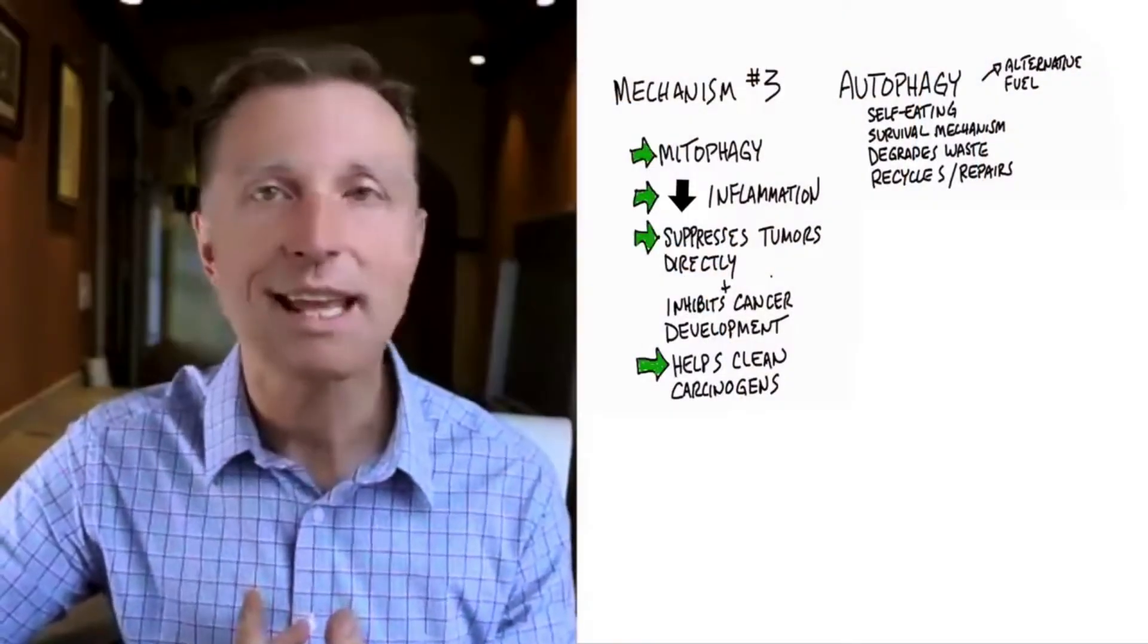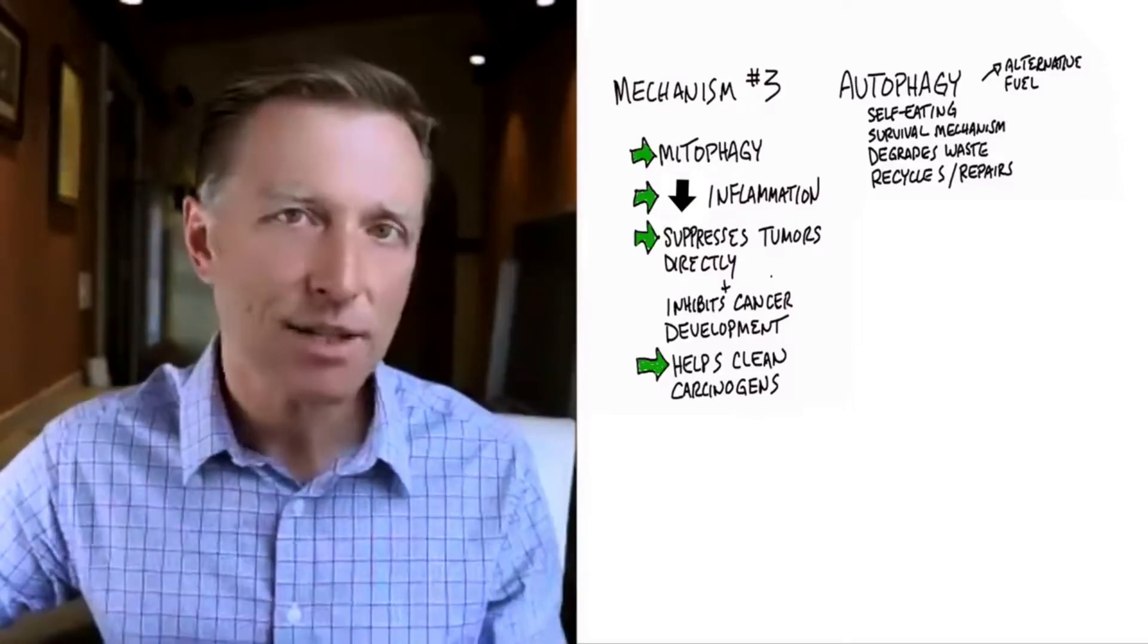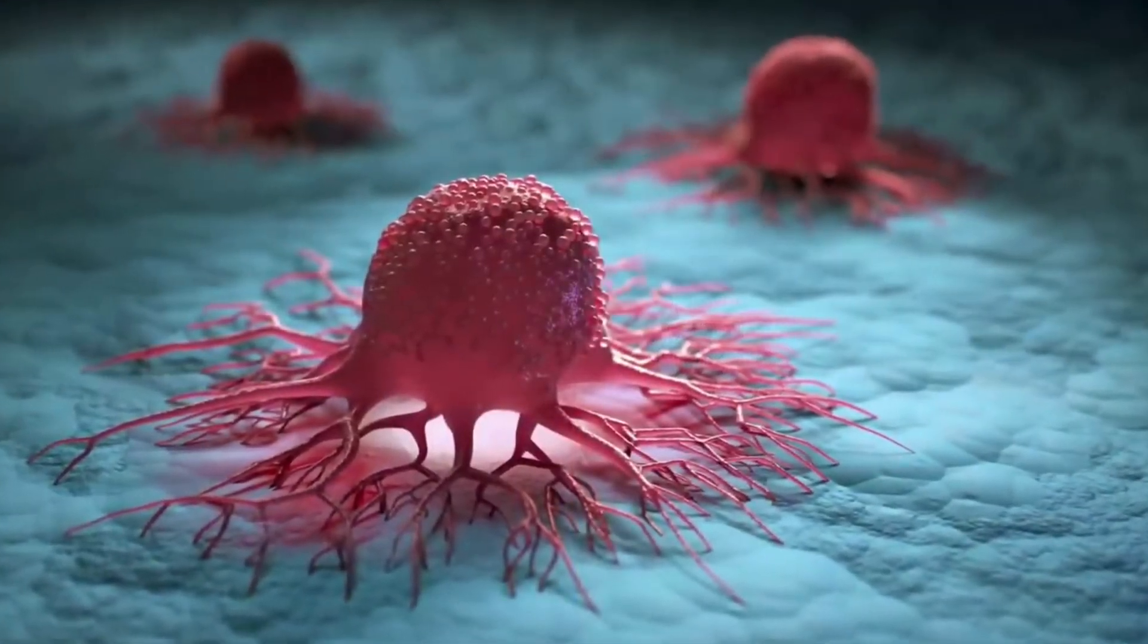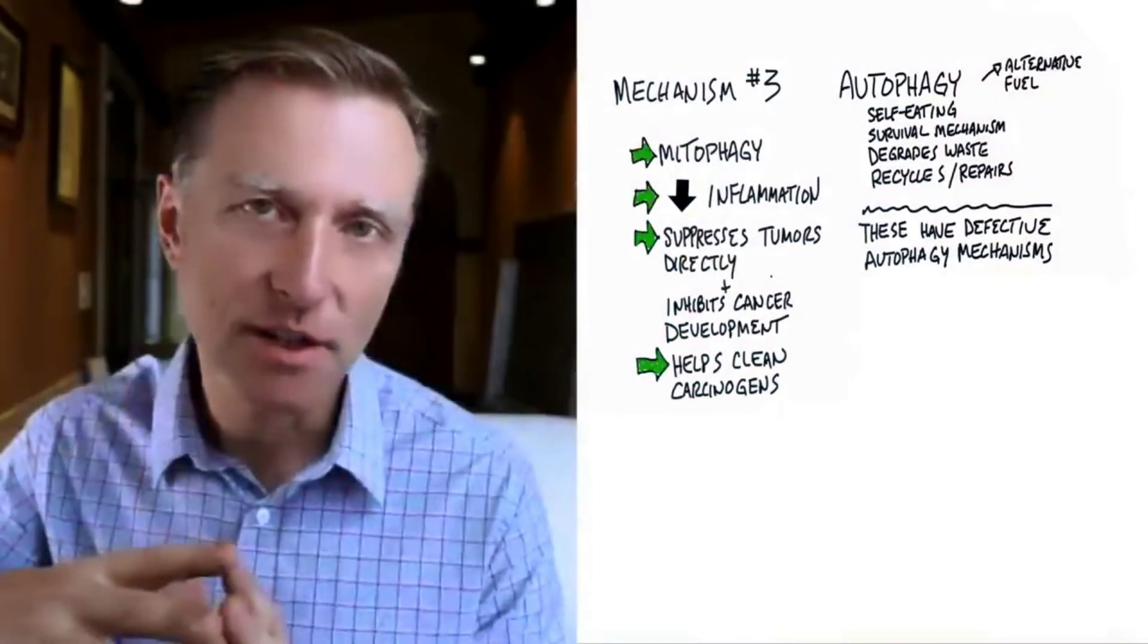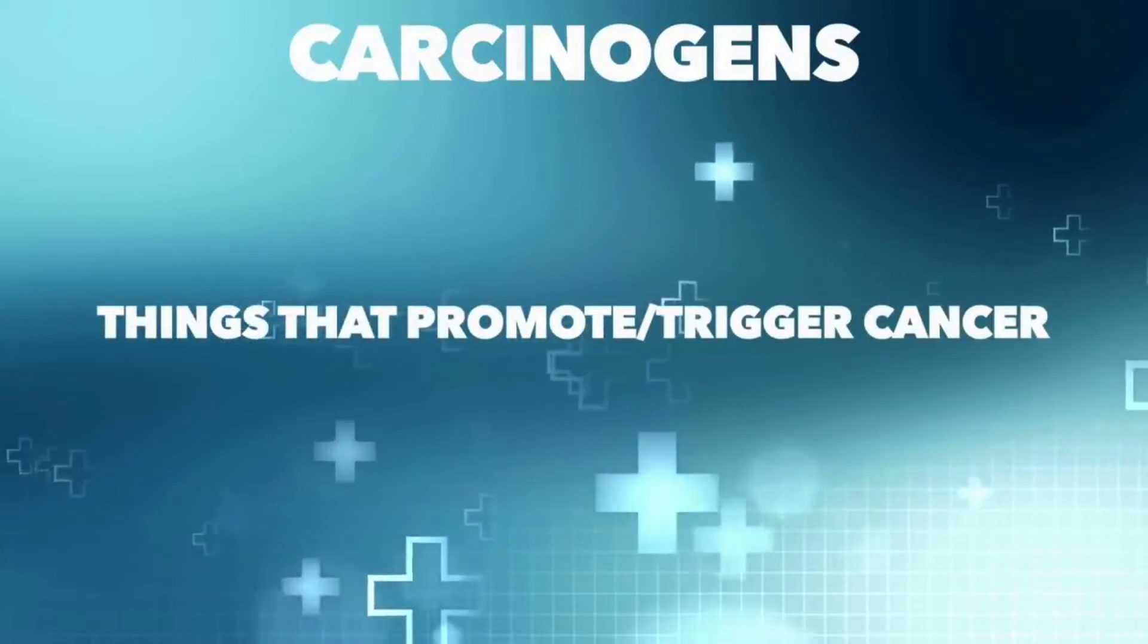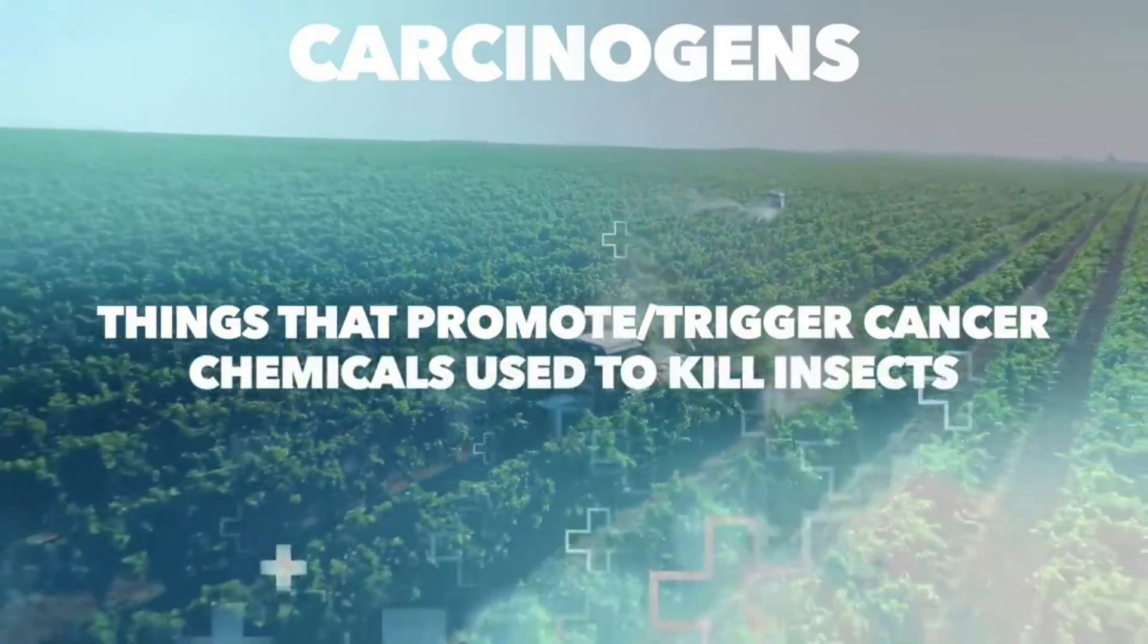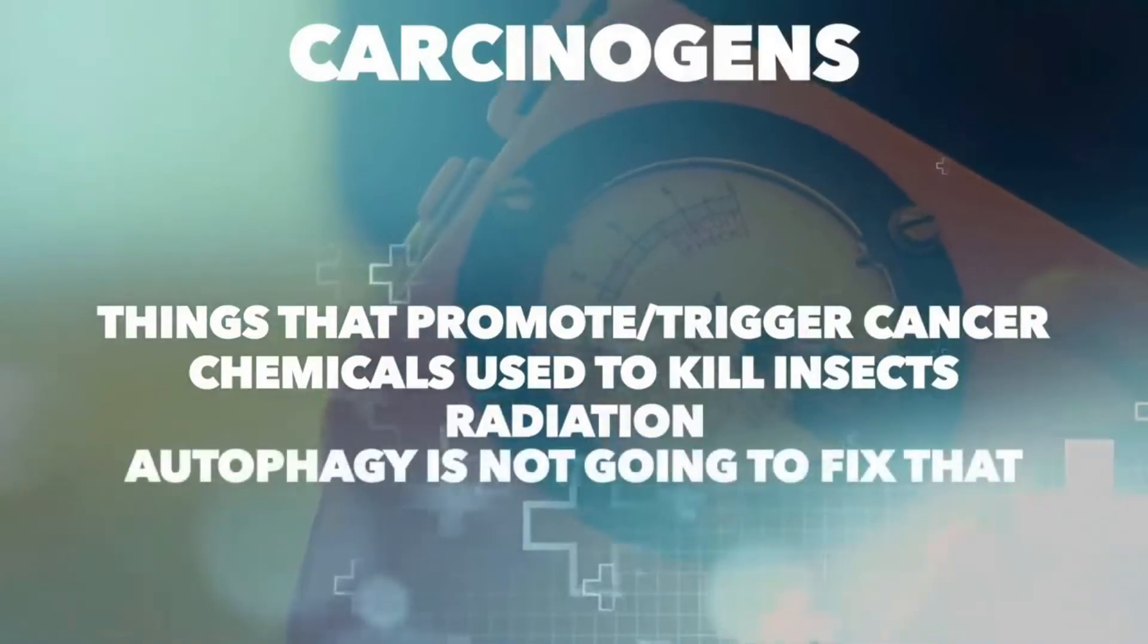Also, autophagy is a very potent anti-inflammatory mechanism. So you're going to drop inflammation. And the thing about inflammation is that cancer tends to spread into inflammation. And this is why people tend to develop cancer in areas of old injury and areas of inflammation. So it's very important to keep inflammation at a minimum. Now, this next point is very interesting. Autophagy also cleans up carcinogens. Carcinogens are those things that promote cancer. They can trigger cancer. That would be like pesticides, insecticides, herbicides, fungicides. Now, radiation can also trigger cancer, but autophagy is not going to clean up radiation.